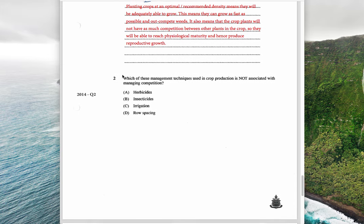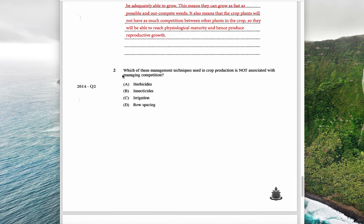Which of these management techniques used in crop production is not associated with managing competition? The answer is insecticides — option B — because insects are not related to plants competing with each other. Herbicides are related, irrigation is related, and row spacing is related to density, but insecticides — option B — is the correct answer.